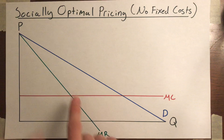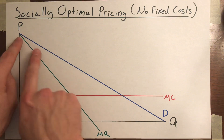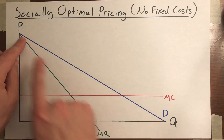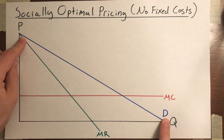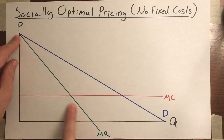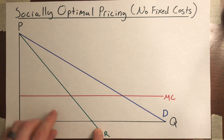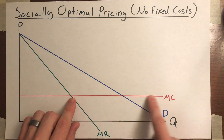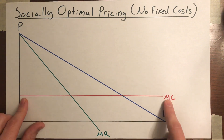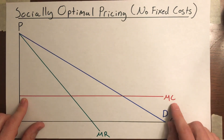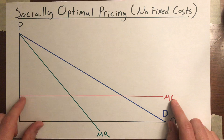So we've got our monopolist with a downward sloping demand curve, a marginal revenue curve that's twice as steep as the marginal cost curve. And again, we're assuming marginal cost is constant, so marginal cost is the same thing as average variable cost.